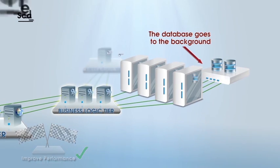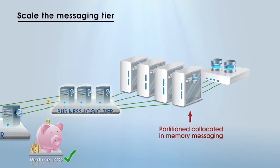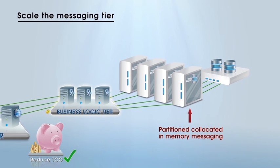Next, we co-locate the messaging with the data, eliminating network hops and achieving scalable messaging while reducing the number of moving parts, enabling us to do away with the messaging tier altogether.